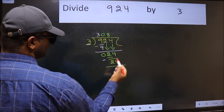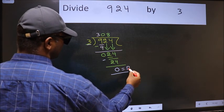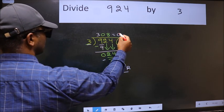No more numbers to bring it down. So we stop here. This is our remainder and this is our quotient.